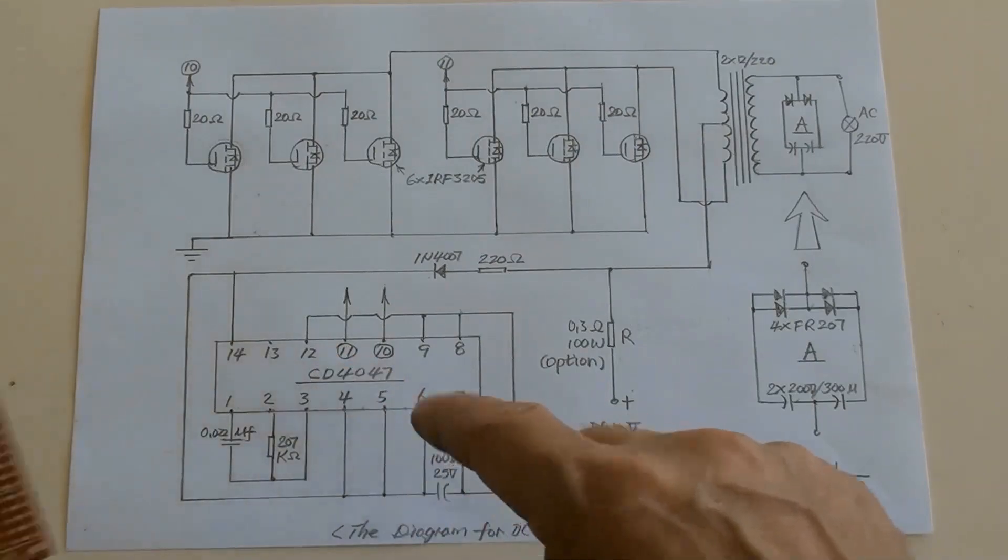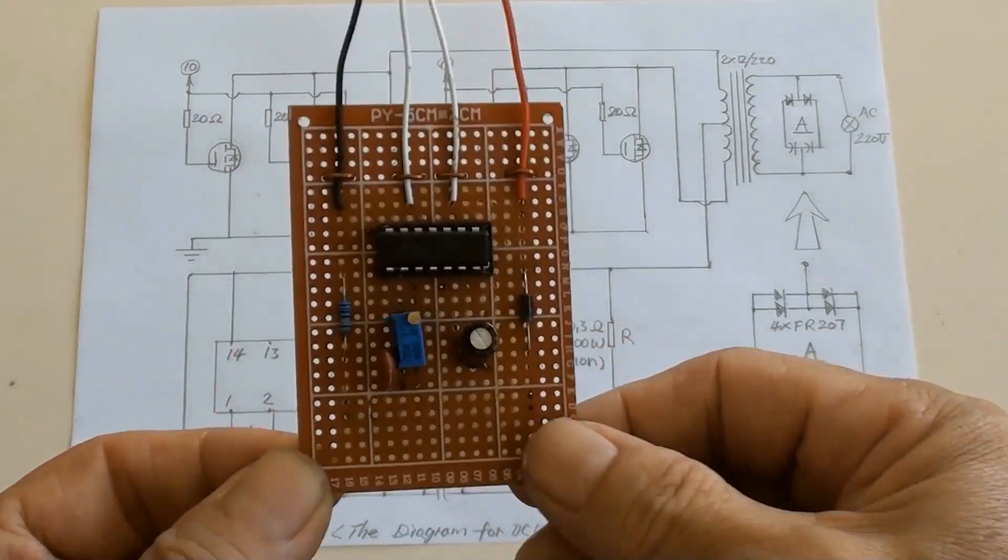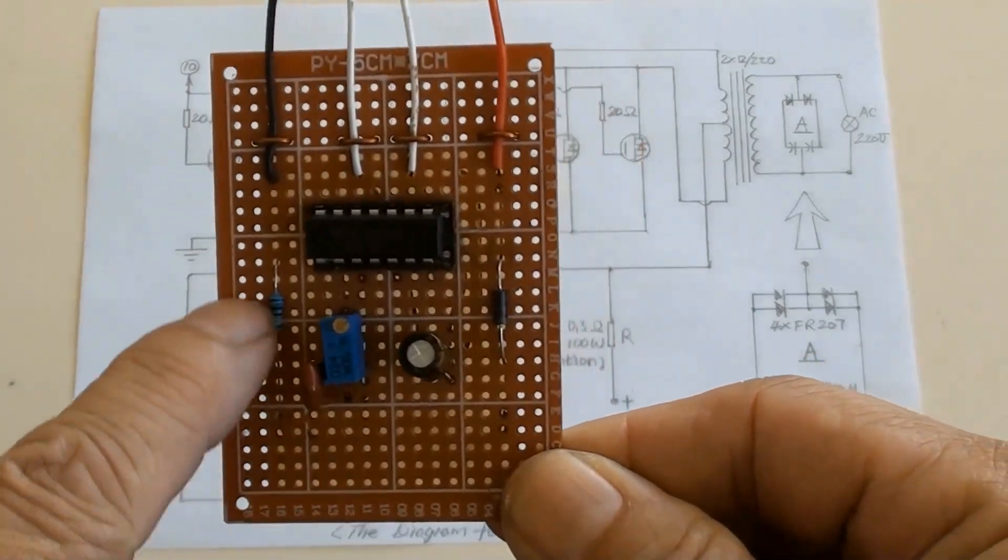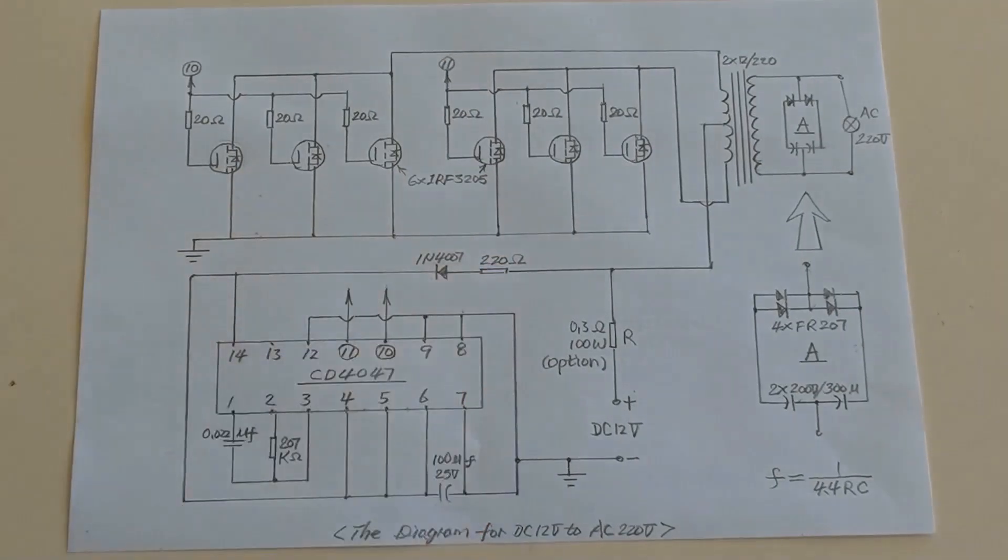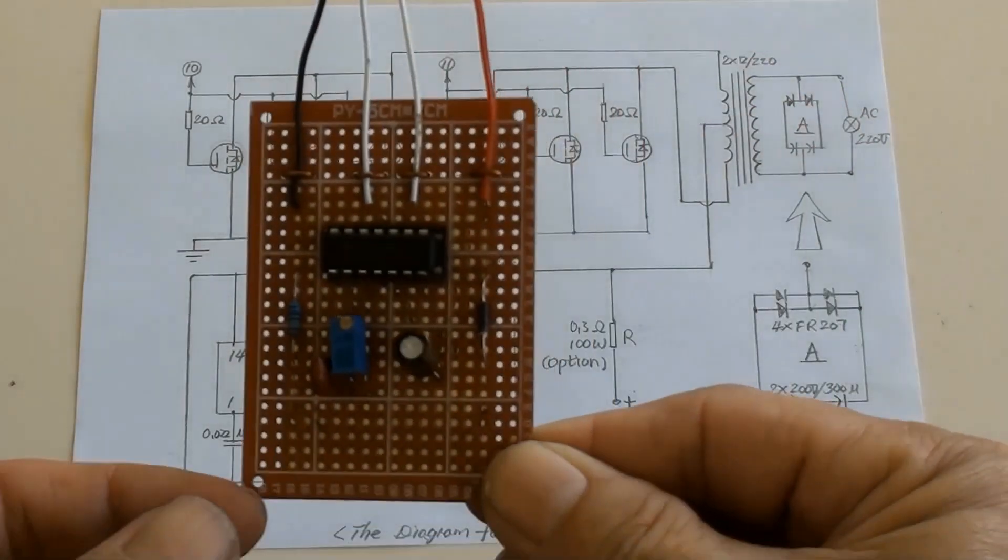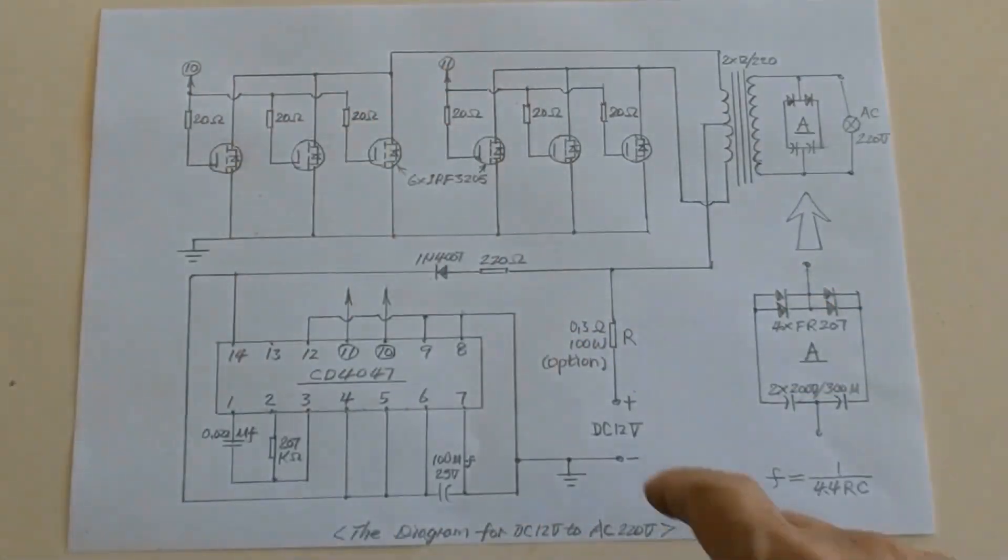This is the IC of CD 4047. And just here. This is a resistor of 220 ohms, 1 quarter Watt, which is here in the circuit. That is a diode of 1N4007, and right there.